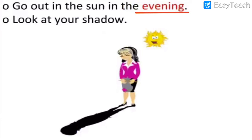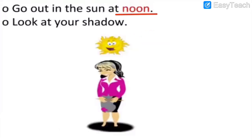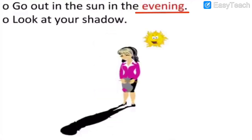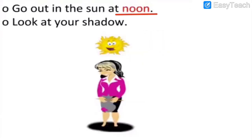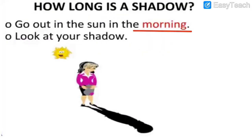In the evening the sun is going down and will soon set in the west, so it is not exactly above our head. The length of the shadow will be long again. So we saw three different lengths of shadow: morning shadow, afternoon shadow, and evening shadow.